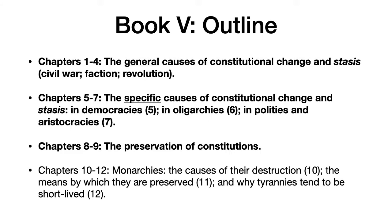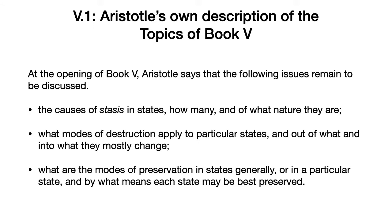That's what this lecture is going to focus on, but then Aristotle goes on in chapters 10 to 12 to discuss monarchies, their causes and destruction, the means by which they are preserved, and why tyrannies tend to be short-lived. Here's Aristotle's own description of the topics of Book 5. He says the following issues remain to be discussed: the cause of stasis in states, how many and of what nature are the causes of faction, strife, civil war, and so forth; what modes of destruction apply to particular states, i.e. oligarchies or democracies; and out of what and into what constitutions mostly change — for example, democracies tend to become more like oligarchies. Finally, what are the modes of preservation in states generally or in a particular state, and by what means each state may be best preserved?